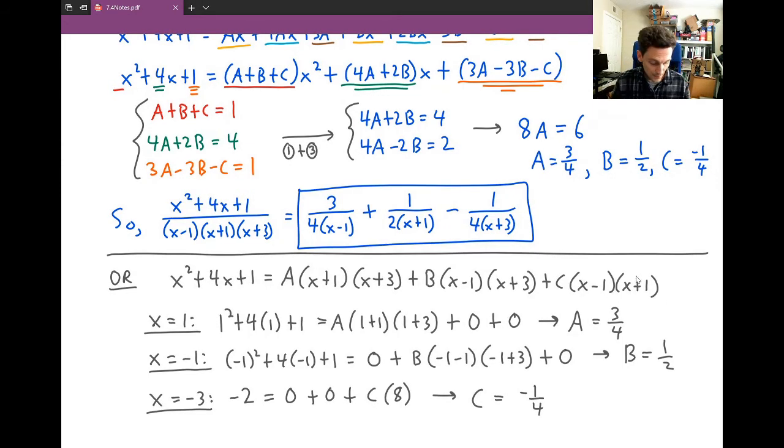Notice we got the same A, B, and C values in much fewer steps. Each method has its positives and negatives. The first way is good with quadratic factors (x² terms on the bottom), while the second way works well with linear factors like (ax + b).